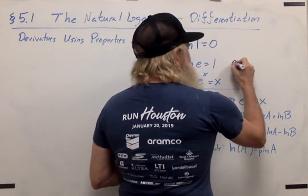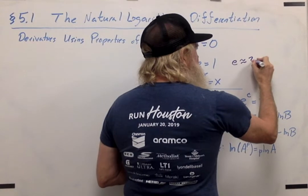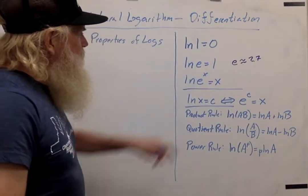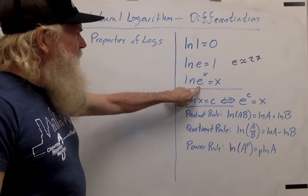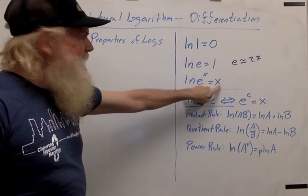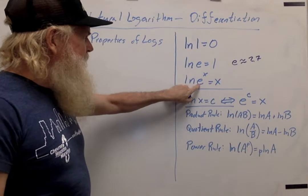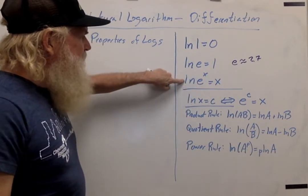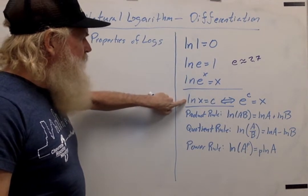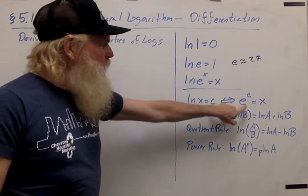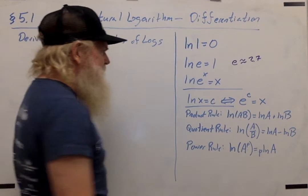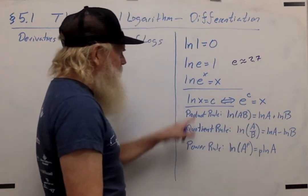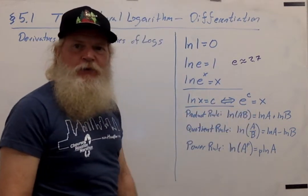You might remember that e is the number which is approximately 2.7. A third property is that natural log of e to the x is x. In other words, the exponential and logarithmic functions are inverses of each other. Another way of saying that is that natural log of x is equal to c if and only if e to the c is x. So this gives us a way of switching back and forth between logarithmic form and exponential form.